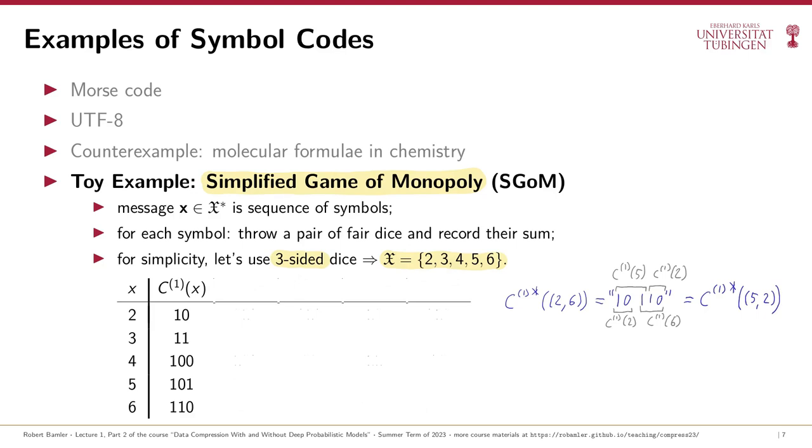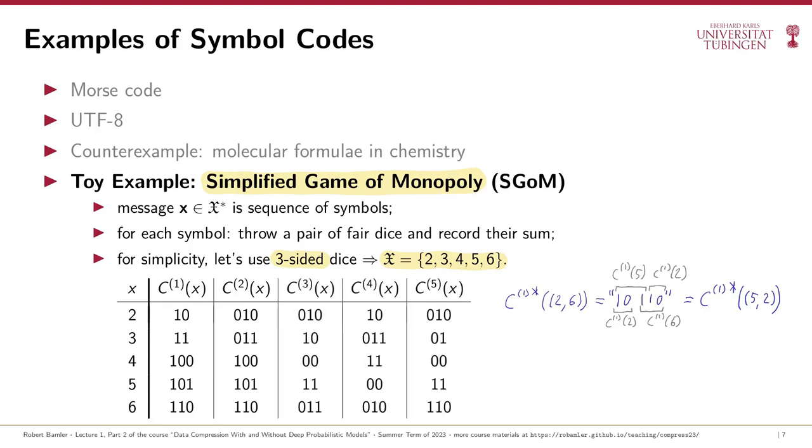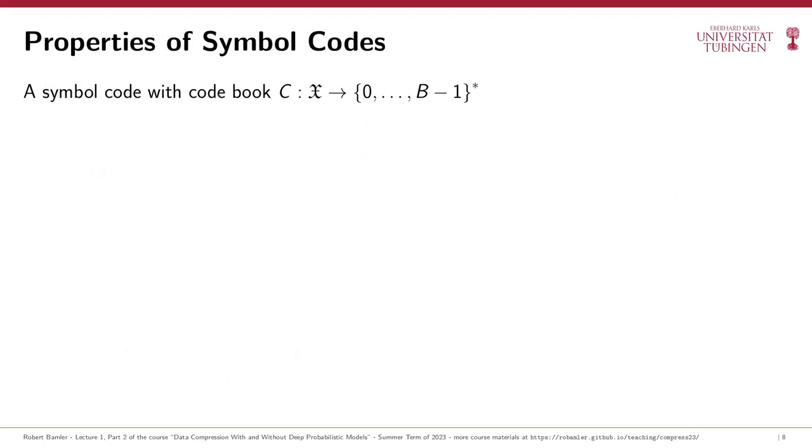When a symbol code has ambiguities like this, then we say that the symbol code is not uniquely decodable. A simple way how we could fix this is if we just made all codewords the same length, for example by padding with the leading 0 bits. I'll call the resulting symbol code C2. This symbol code is uniquely decodable, but it has longer codewords. Already in this simple toy example, it turns out that if you choose the codewords carefully, you can make some of them shorter than others and still end up with a uniquely decodable symbol code. And you'll look at a few examples of this on problem set 0, which is linked in the video description.